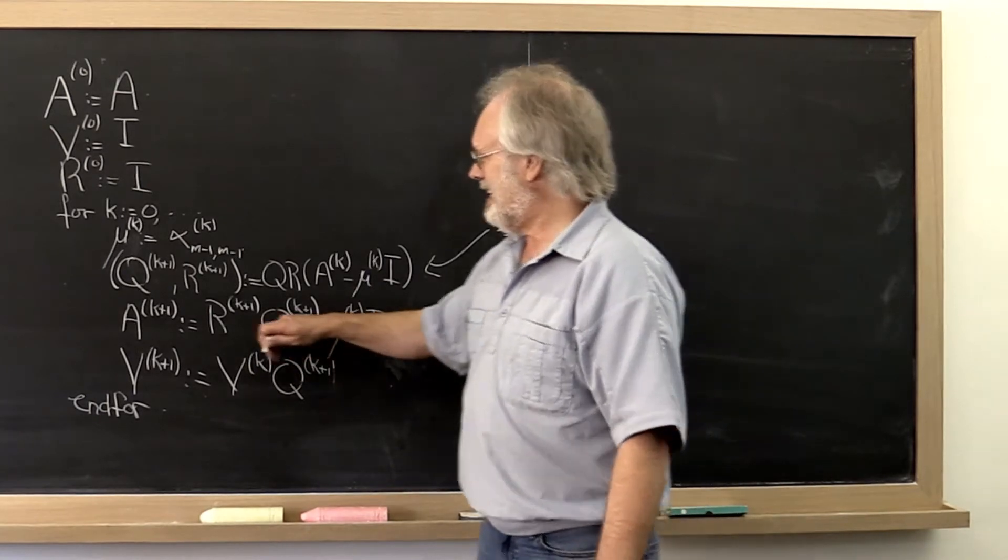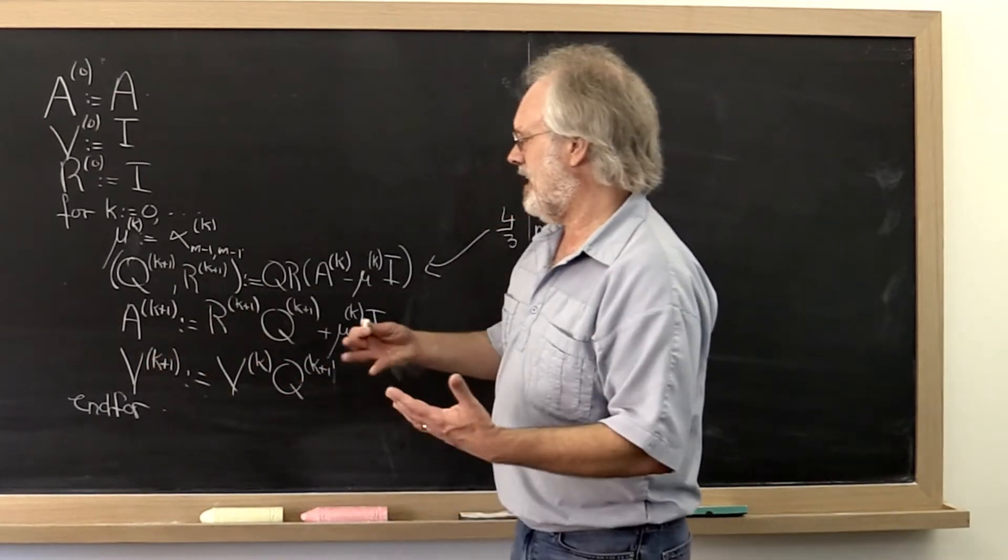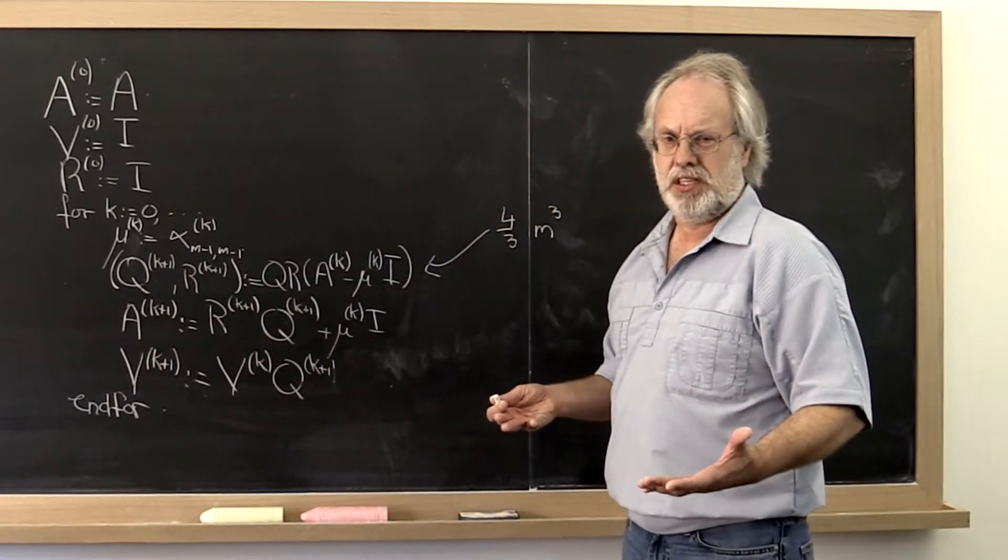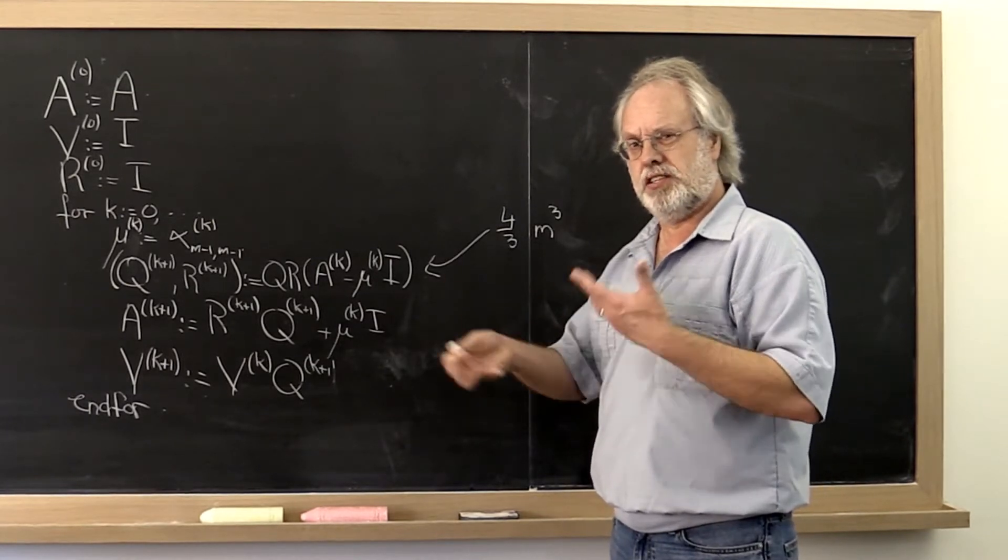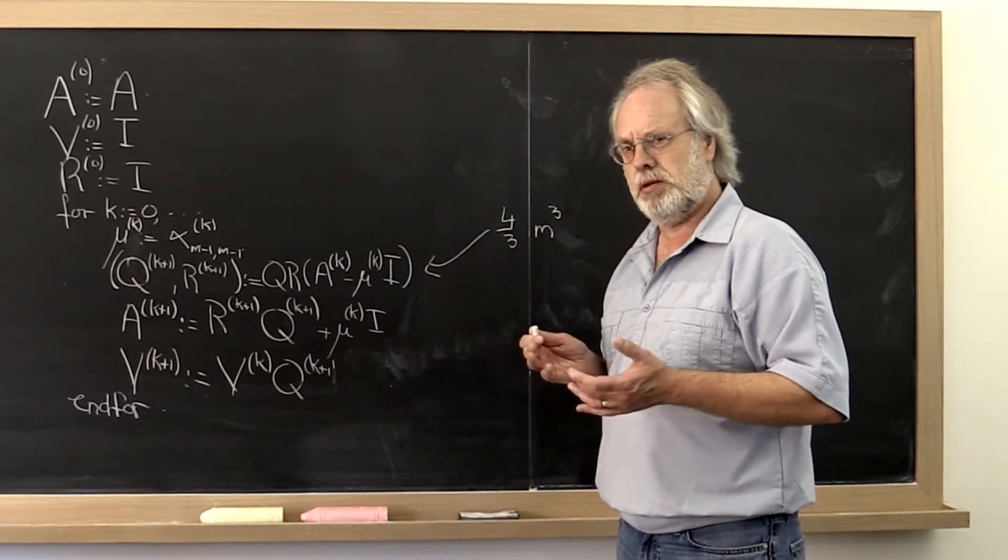And you know that in the end the resulting matrix is again Hermitian. So you should be able to take advantage of some of the symmetry that comes in, or maybe not.